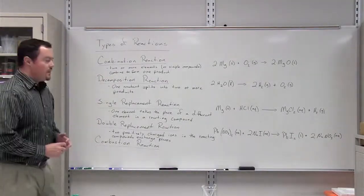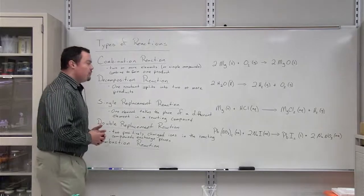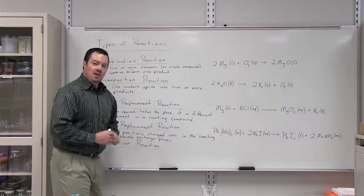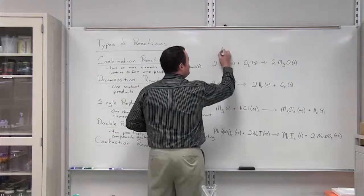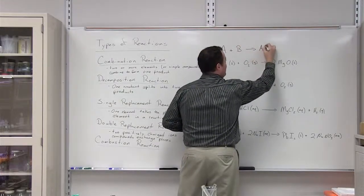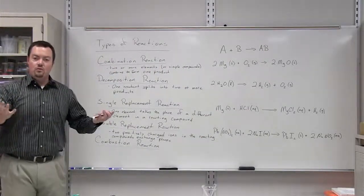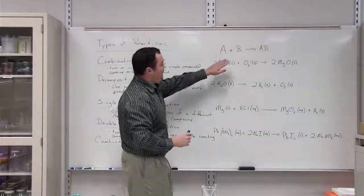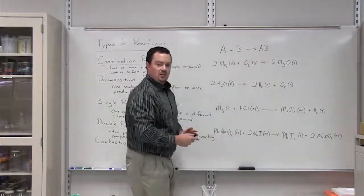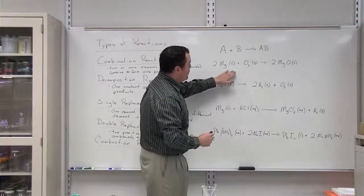First, let's start with our combination reaction. In a combination reaction, two or more elements or simple compounds combine to form one product. The generic formula for a combination reaction is A plus B yields a product of AB. In this reaction we're taking two reactants — the items on the left side of the arrow — and combining them to form one product on the right side of the arrow.